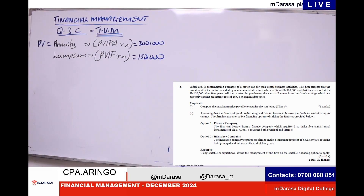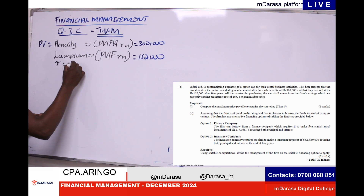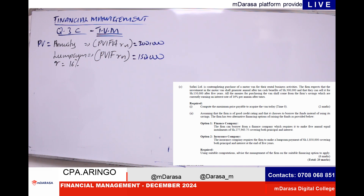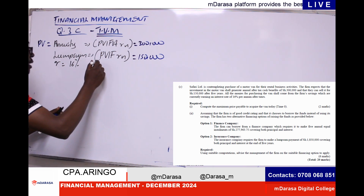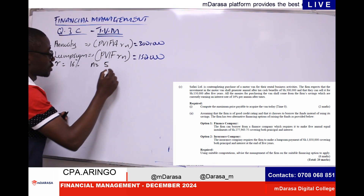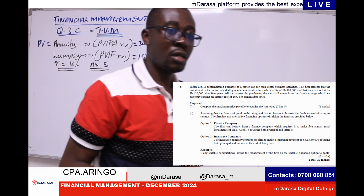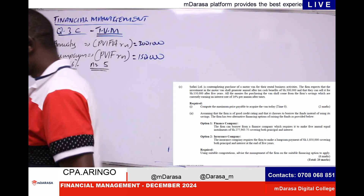Once we have this data, we identify the rate given here — 16% — and the period, which is five years, since they sell it after five years. So our N in this context is five years. Once we have this data, we are very good to go. What we are required to determine is the maximum price payable to acquire the van today — that is our present value.